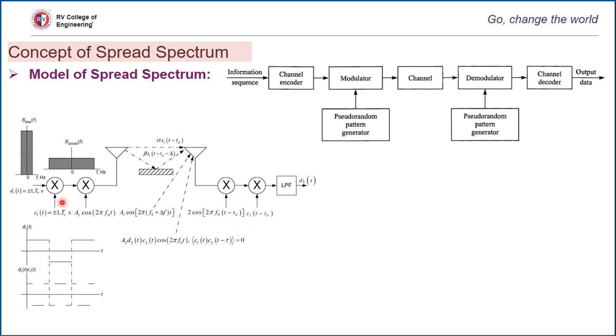Our treatment of spread spectrum signals will focus on the performance of the digital communication system in the presence of narrow band and broadband interferences. Two types of modulation are considered: PSK (phase shift keying) and FSK (frequency shift keying).